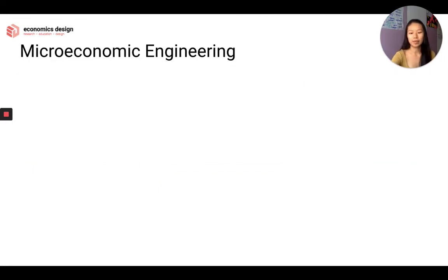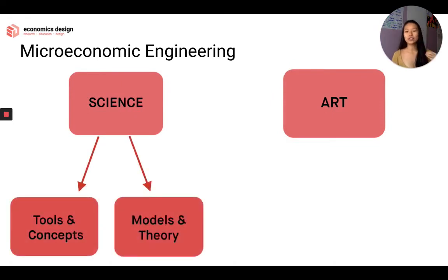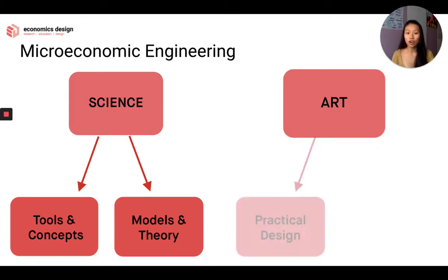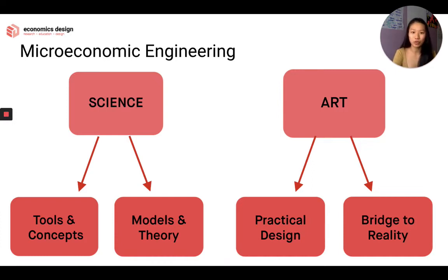So what is market design? Market design is a form of microeconomic engineering. It combines two things: science and art. It's science because it uses tools, concepts, models, and theories to create a design system. But it is also an art because it uses practical design. Sometimes we can make the most beautiful design on paper, but when creating these models and theories, we are constrained by a lot of assumptions.